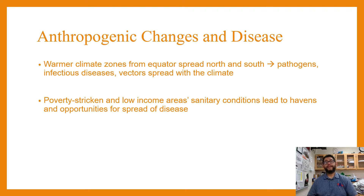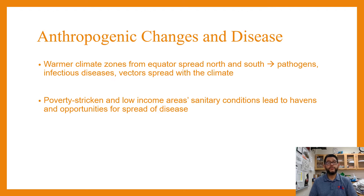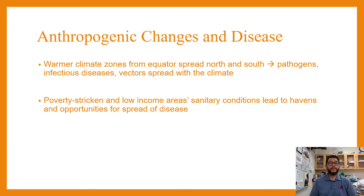Some of these anthropogenic changes in diseases are going to lead to different issues. A lot of the time you're going to see the mosquito as a vector — that's something that helps spread the disease. Mosquitoes are spreading because there are warmer climate zones around the Earth. Places that are poverty-stricken and low-income are going to have certain conditions that lead to more common forms of disease.